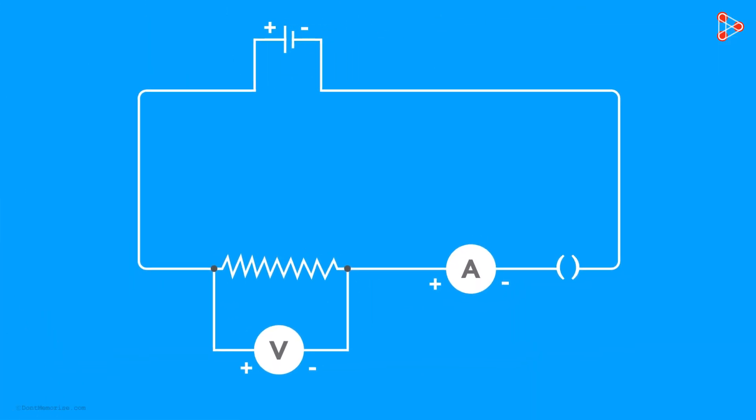First, we form a circuit like this which has just one cell as the source. This is the nichrome wire which is the resistance also. This is the ammeter which is in series. This is the voltmeter which is connected in parallel. And this is the plug key.